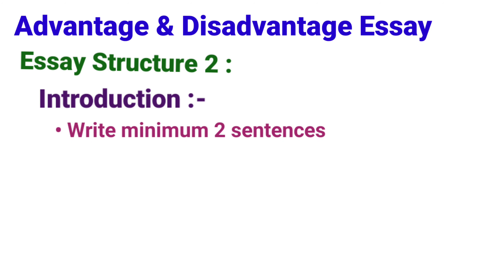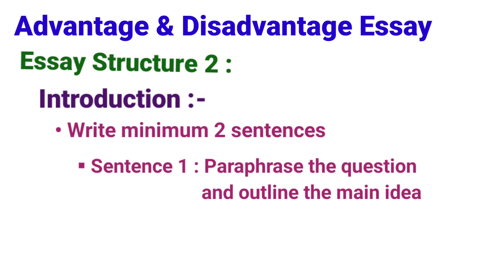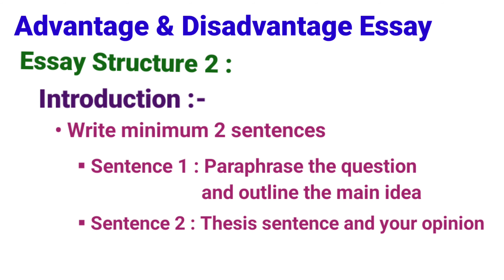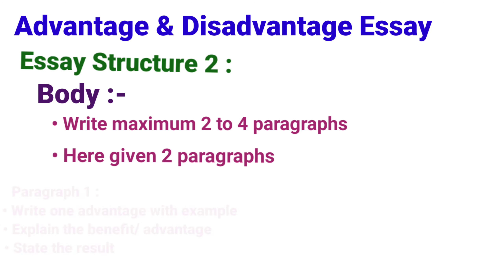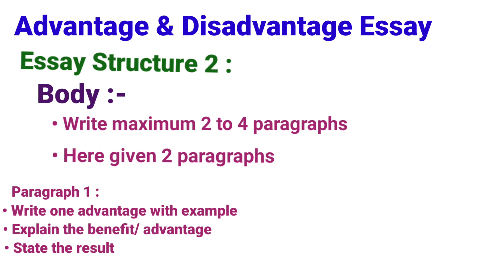Essay Structure 2: In the introduction, write a minimum of two sentences. In the first sentence, paraphrase the question and outline the main idea. The second sentence is the thesis sentence and your opinion. In the body, write a maximum of two to four paragraphs. In Paragraph 1, write one advantage with an example, explain the benefit or advantage, and state the result.